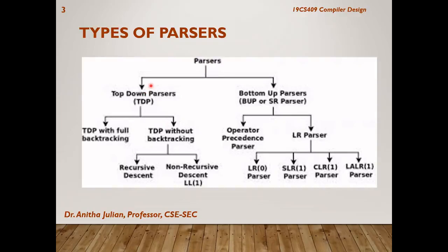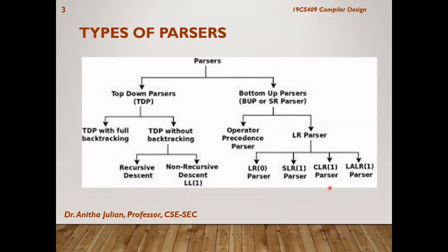We will have a broad overview of the types of parsers we have already seen. We have top-down parsers and bottom-up parsers. Under top-down parsers we studied backtracking parsers and without-backtracking recursive descendant and non-recursive descendant types. Under bottom-up parsers we have already seen operator precedence. Today's lecture covers LR parsers, which have four types: LR(0), SLR, CLR, and LALR. SLR, CLR, and LALR are slightly modified versions of the LR(0) parser. We will restrict our study to LR(0) in this lecture.